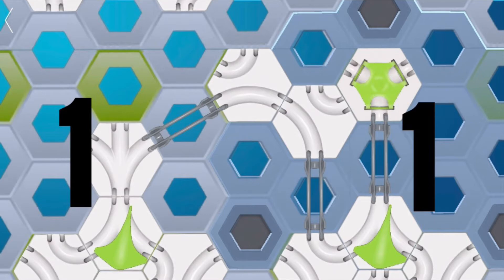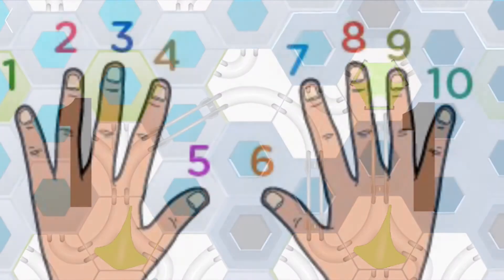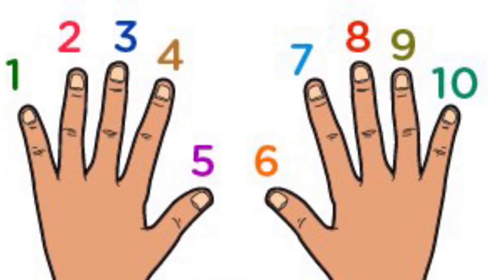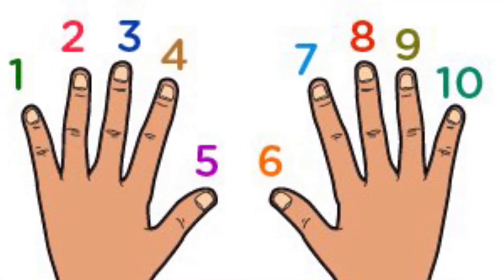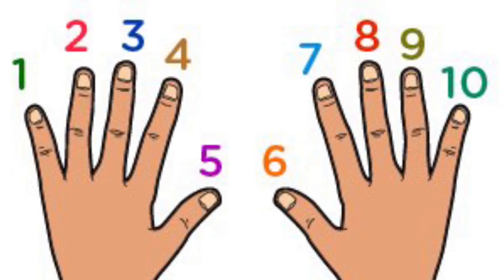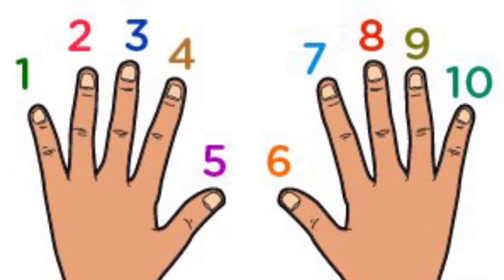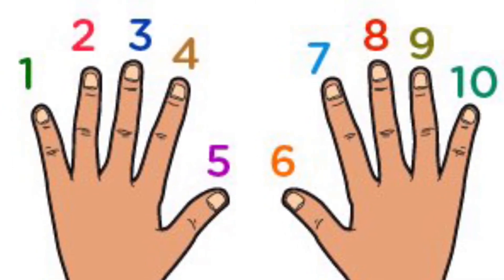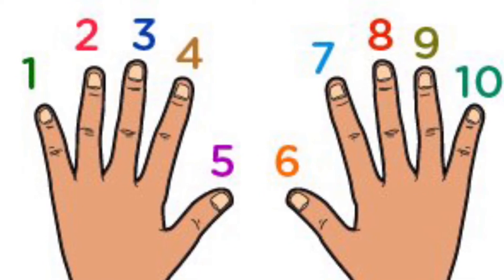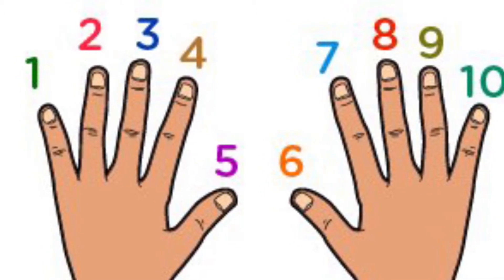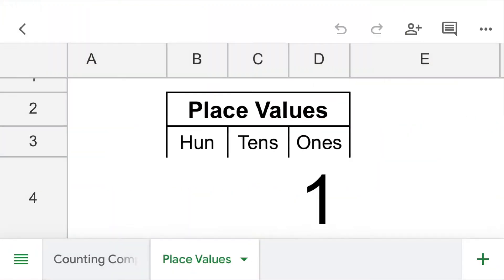Actually, a computer does count like we do, but it can't count as high as we do using a single digit. To understand what's going on here, we first need to take a closer look at how people count numbers. Our system of numbers is based on counting in groups of 10 because we have 10 fingers on which to count. And when we write down the numbers we are counting, we start by writing single digits in the 1's place value.